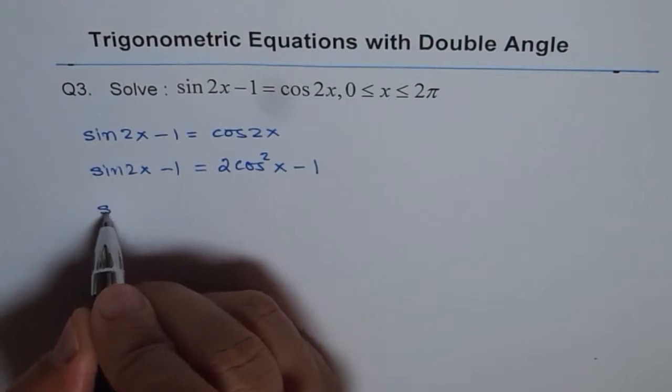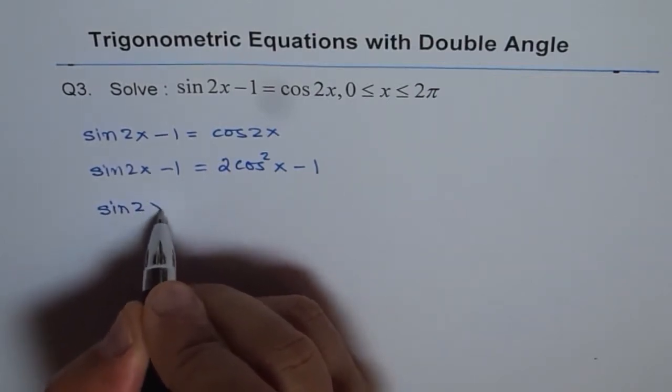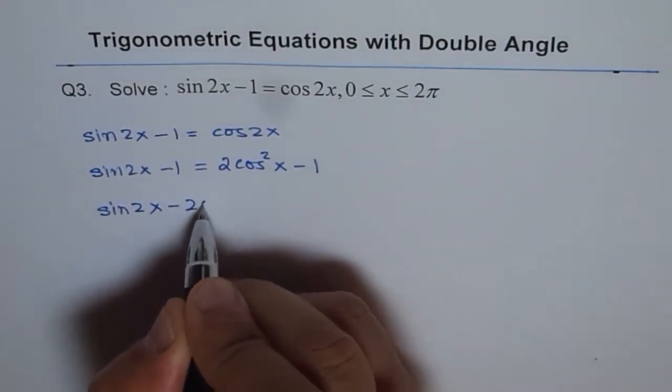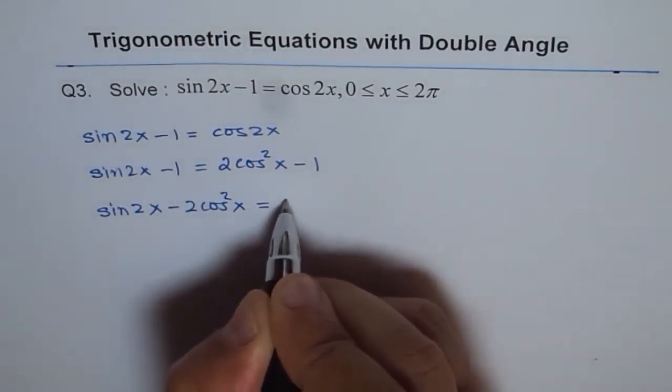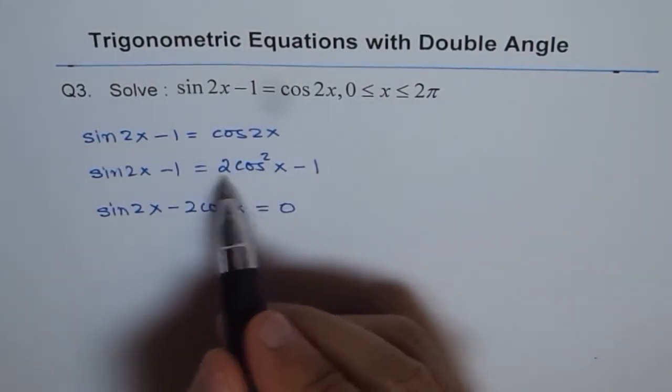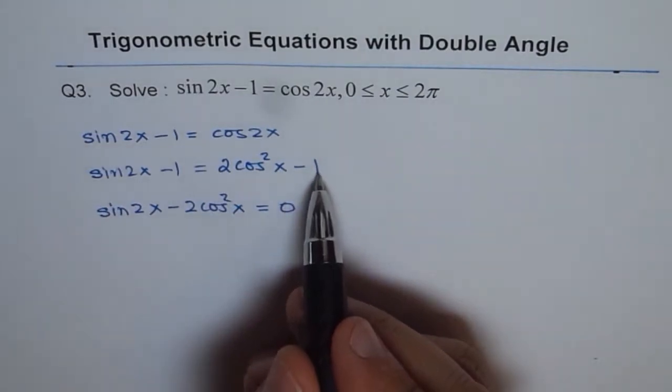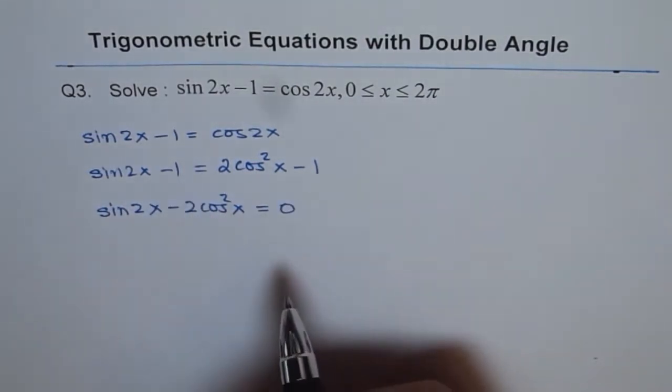We can bring 2 cos² x to the left side. We get sin 2x minus 2 cos² x equals 0. We'll bring all terms to the left side, so it becomes plus 1 minus 1, which equals 0.